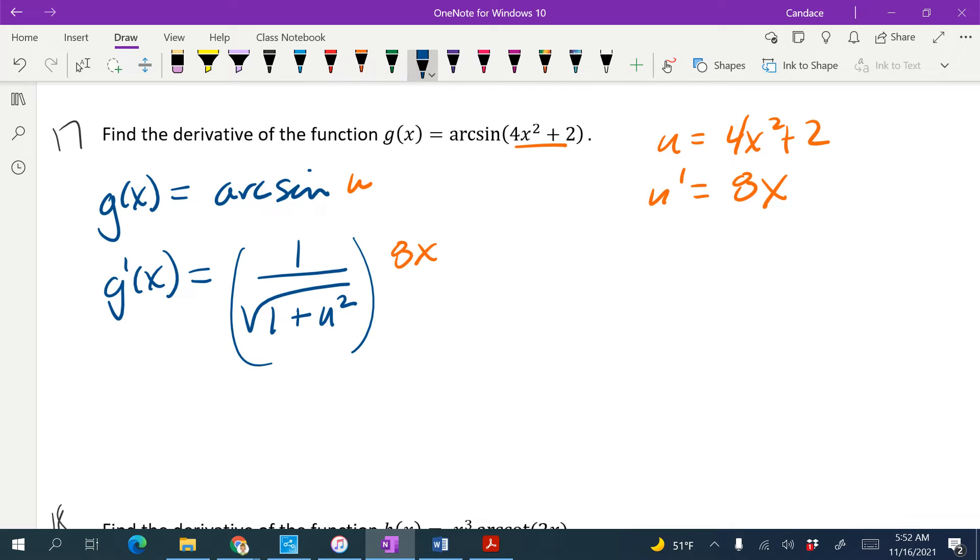We're going to rewrite it and replace the u. So g prime of x equals, this is just going to go into the numerator, so 8x over the square root of 1 plus, and instead of the u, we're going to write 4x squared plus 2.